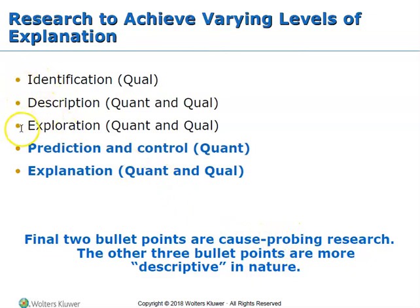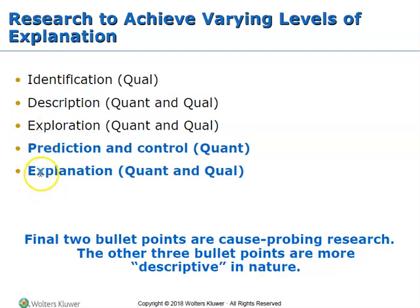These are higher-level studies. We typically can't see something new happening and jump straight into predicting it because we don't even know what it is. So until we can identify what it is and describe it and explore what those people have in common who are experiencing this phenomenon, then we can't predict who's going to experience it, we can't explain why, and we can't develop interventions to treat those situations. So it's a ladder — we start here and try to get to these more sophisticated types of research methods.